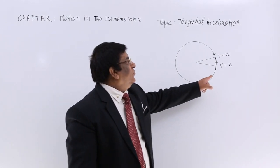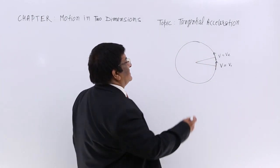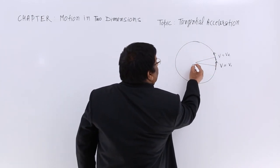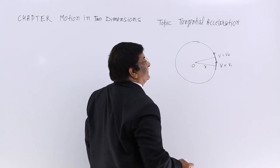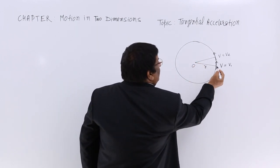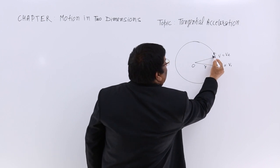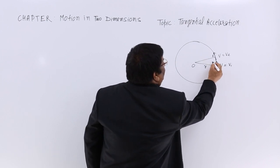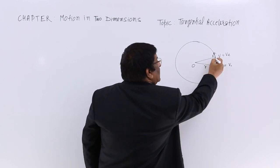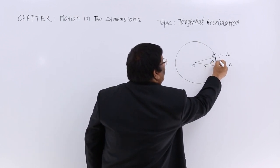There is a particle moving along the circumference of a circle which has radius R and the center is O. At one instant it is at point A, at the other instant it is at point B, and the time passed is dt. If I draw a line here, this line has a length dx.